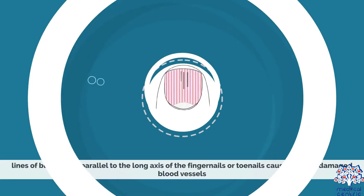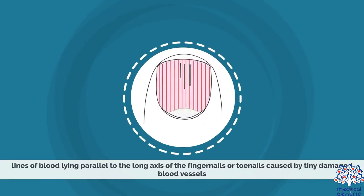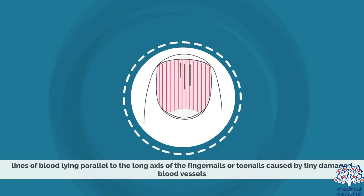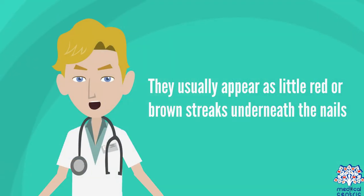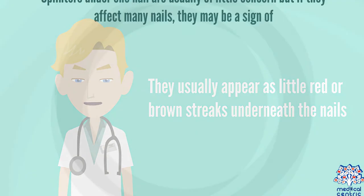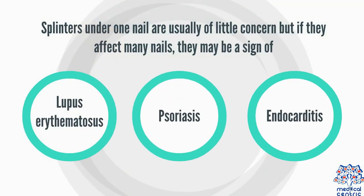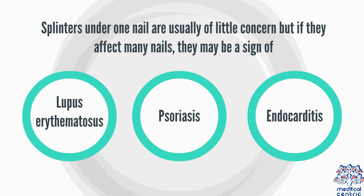Splinter hemorrhage: lines of blood lying parallel to the long axis of the fingernails or toenails, caused by tiny damaged blood vessels. They usually appear as little red or brown streaks underneath the nails. Splinters under one nail are usually of little concern, but if they affect many nails, they may be a sign of lupus erythematosus, psoriasis, or endocarditis.